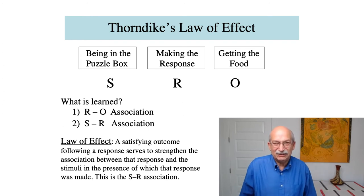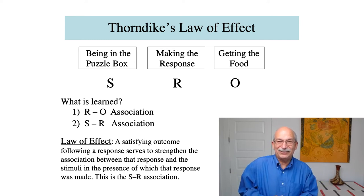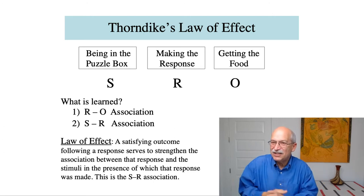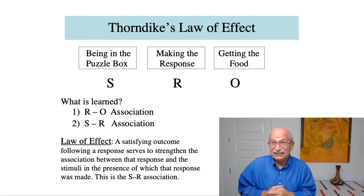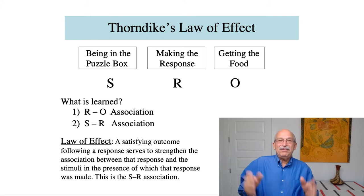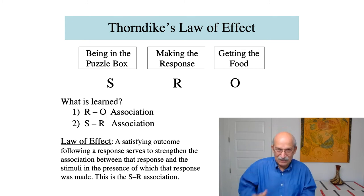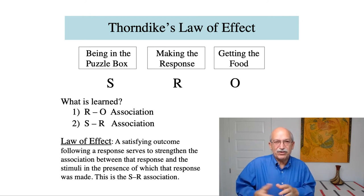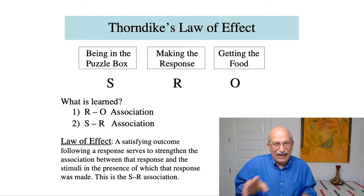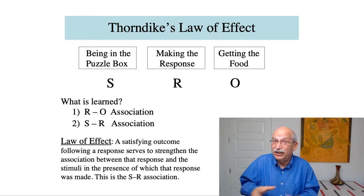His answer to what was learned is what we now know as the Law of Effect. He stated it as a law of learning called the Law of Effect. The Law of Effect has gotten kind of lost in that people assume they know what it is and are often incorrect. Often what people say is that having made the response and gotten the reinforcer, the animal learns an association between the response and the response outcome — that is, an R-O association — and they characterize the Law of Effect as the learning of an R-O association.